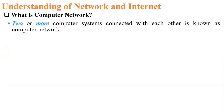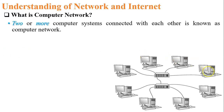Now, what is a computer network? Two or more computers connected with each other is called a computer network. In this figure, there are a number of computers connected with each other through intermediate devices such as a hub, switch, or router.